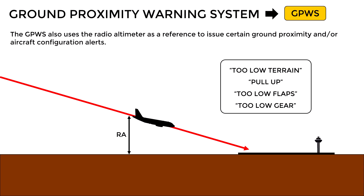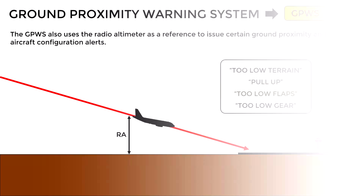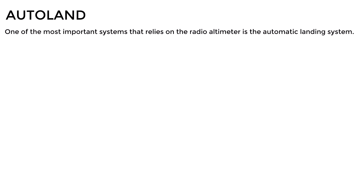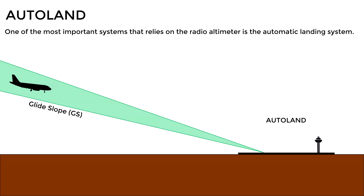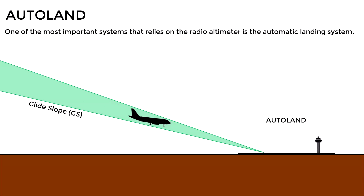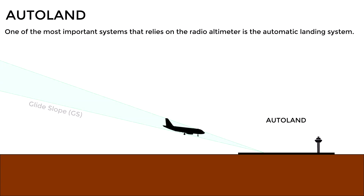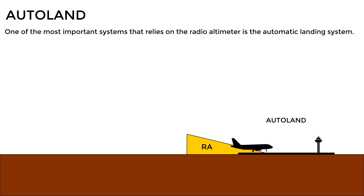Another system that relies in part on the radio altimeter is the automatic landing system, known as Autoland. In this case, initially the aircraft uses the glide slope to descend in the correct approach path. However, from a certain height above the ground, the system stops using the glide slope and uses only the information from the radio altimeter to complete the landing.